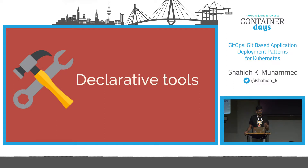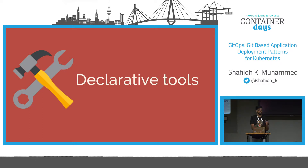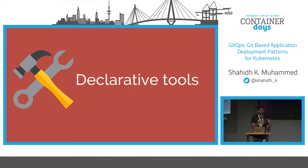Declarative means a configuration is guaranteed by a set of facts instead of a set of instructions. So instead of saying "start 10 of these servers and tell me when they are ready," you say "there are 10 of these servers." You don't say how they are started or what order they are started in. You only say this is the final state that I want. That's the fundamental property of declarative tools — you state facts, not operations.